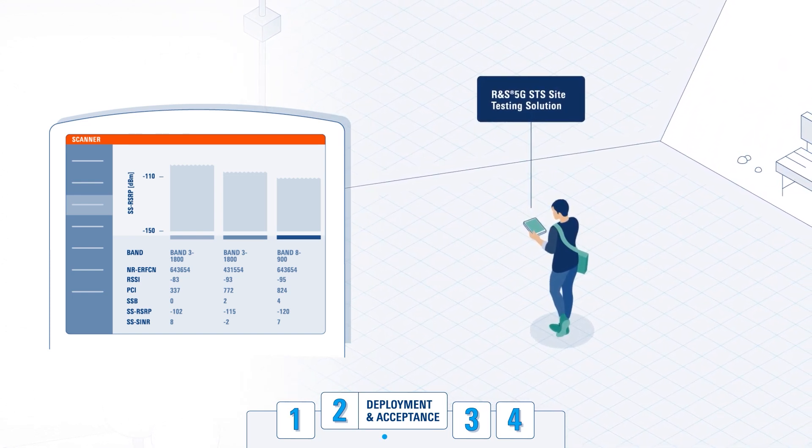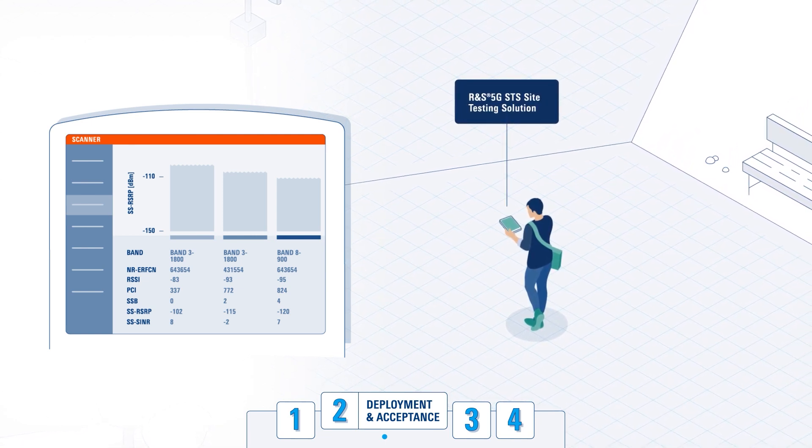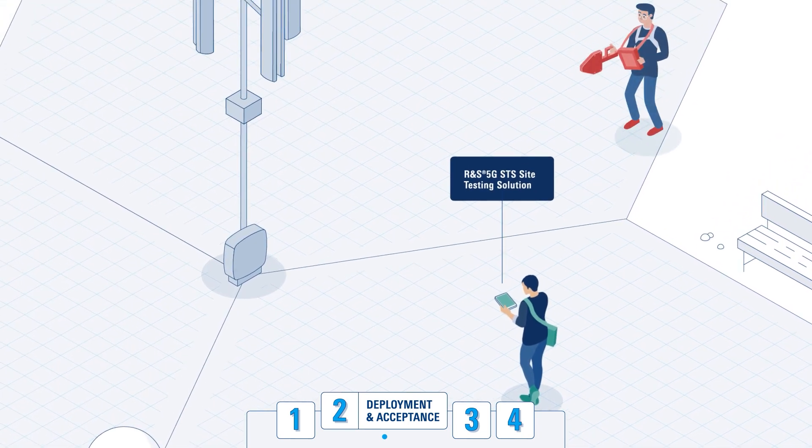And by conducting advanced timing measurements like time alignment error, you can also troubleshoot specific parameters whenever necessary.